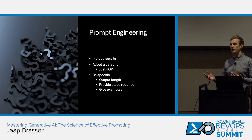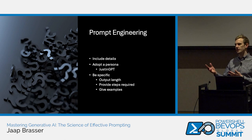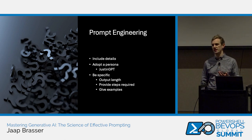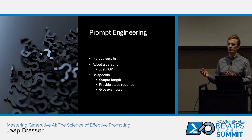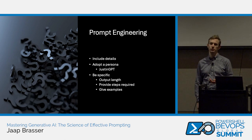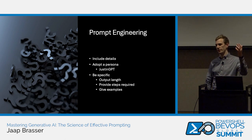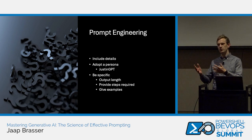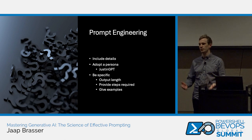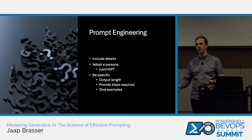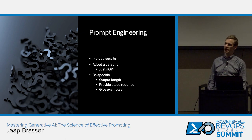Give examples. If you're creating a new function that is part of your module, provide a function you've already created and have it use that as a baseline so it has a better understanding of what it's supposed to do. For unit tests, provide your function so it knows what it's creating tests for. One strategy for unit tests: instead of asking it to just write 15 Pester tests for your function, ask it to describe the function and what paths the code can follow, then say 'for the first path you described, generate three Pester tests.' You get better responses that way.